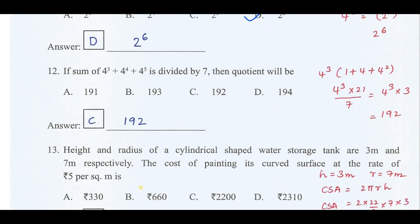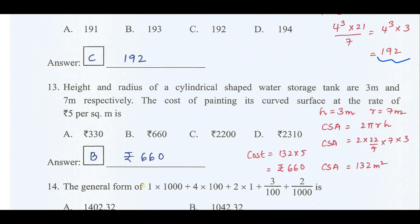Twelfth question: taking 4 cube as common factor and simplifying we get the quotient as 192. Height and radius of a cylindrical shaped water storage tank are 3 meters and 7 meters respectively. The cost of painting its curved surface at the rate of 5: we should find out the CSA of cylinder, what we get is 132. Now 132 into 5 is 660. Therefore the correct answer is 660.